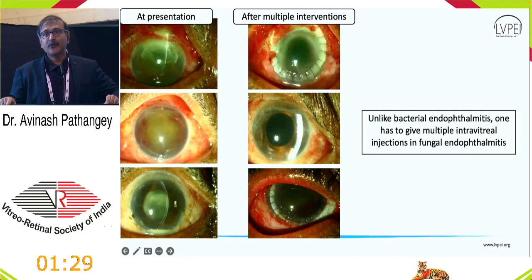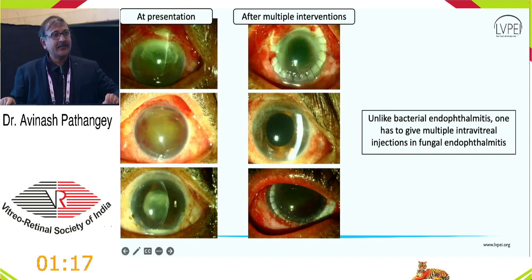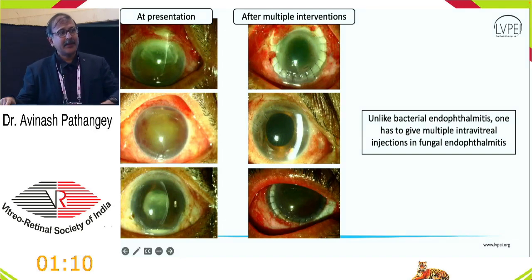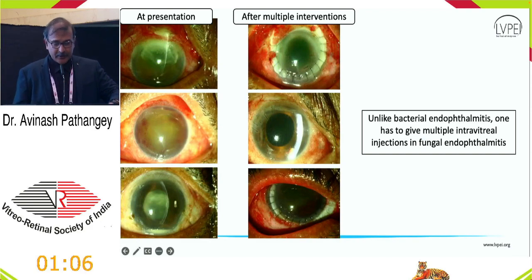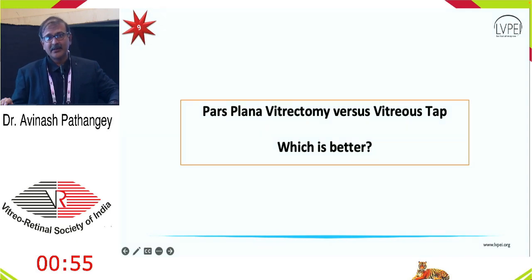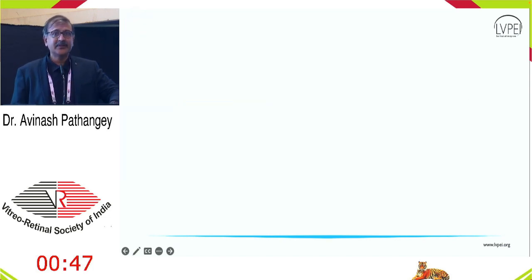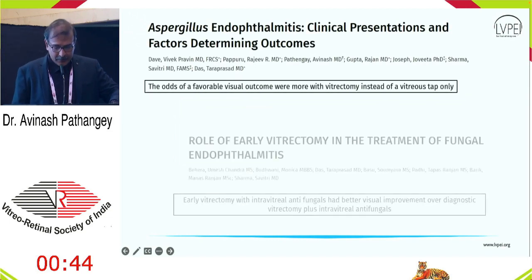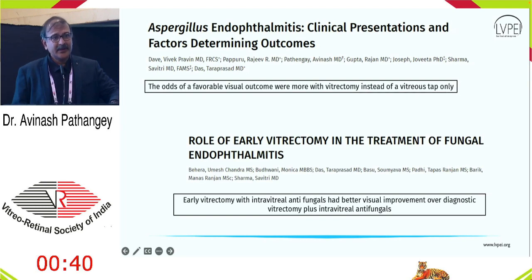There are cases where patients received multiple injections in a cluster, and we were not only able to salvage the eye but also restore a decent and favorable vision. On the debatable topic of vitrectomy versus TAP in fungal endophthalmitis: we cannot extrapolate EVS findings because EVS did not study fungal endophthalmitis. Two of our publications have shown that early and complete vitrectomy yields favorable outcomes in patients with fungal endophthalmitis.